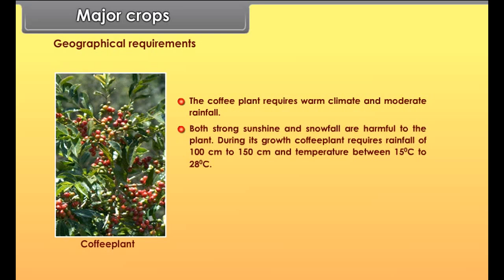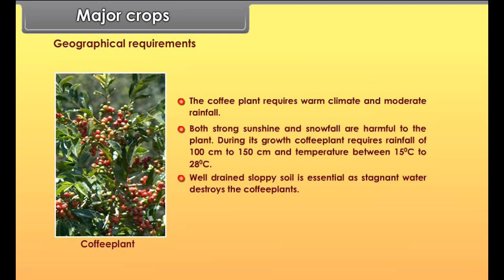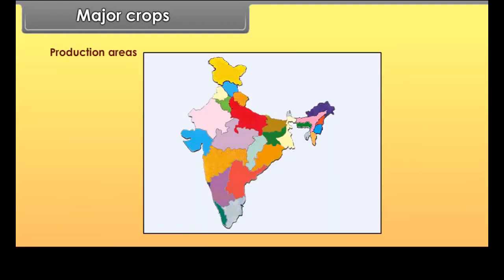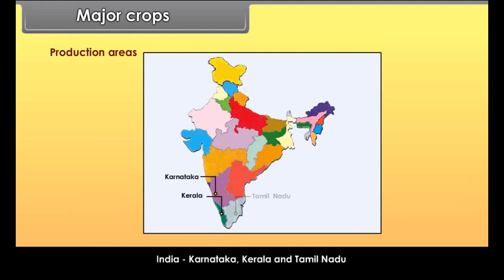During its growth, the coffee plant requires rainfall of 100 cm to 150 cm and temperature between 15 degrees Celsius to 28 degrees Celsius. Well-drained, sloppy soil is essential as stagnant water destroys the coffee plants. Production areas in India include Karnataka, Kerala and Tamil Nadu. World producers include Brazil and Colombia.